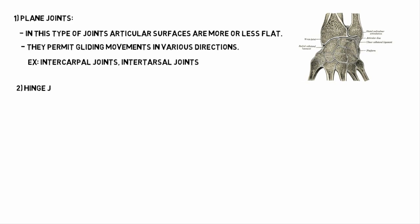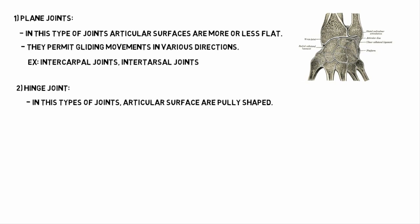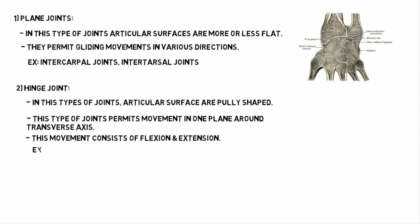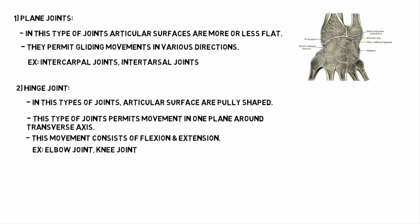Next is the hinge joint. In this type of joint, the articular surfaces are pulley shaped. This type of joint permits movement in one plane around a transverse axis. These movements consist of flexion and extension. Examples are the elbow joint and knee joint.